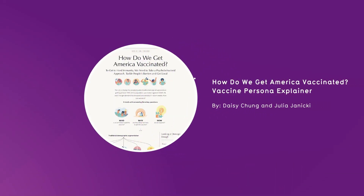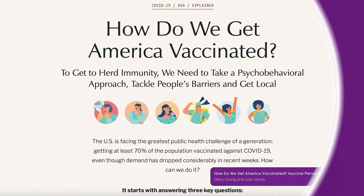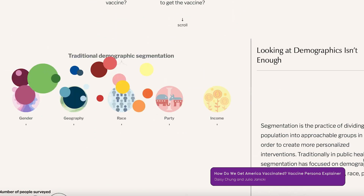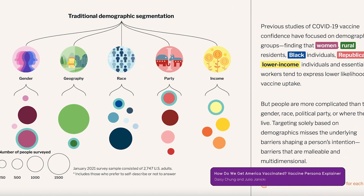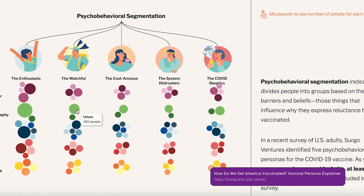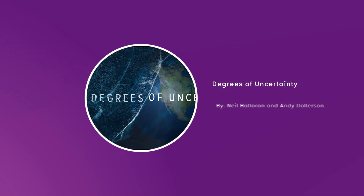How do we get America vaccinated? Vaccine Persona Explainer by Daisy Chung and Julia Janicki — a data-driven explainer detailing what psycho-behavioral segmentation is and how we can use this approach to drive vaccine uptake.